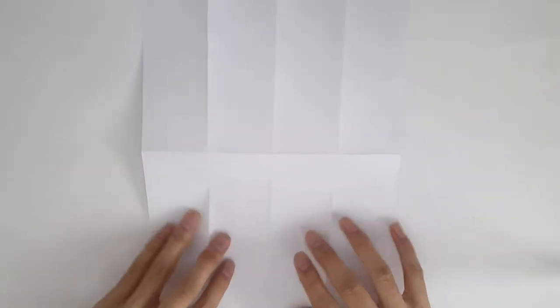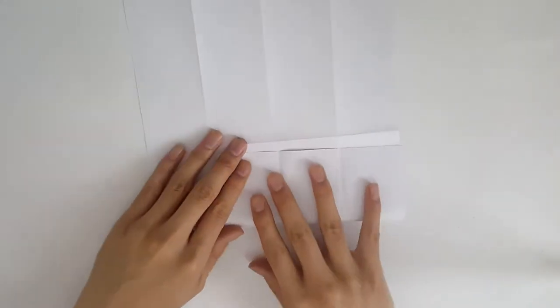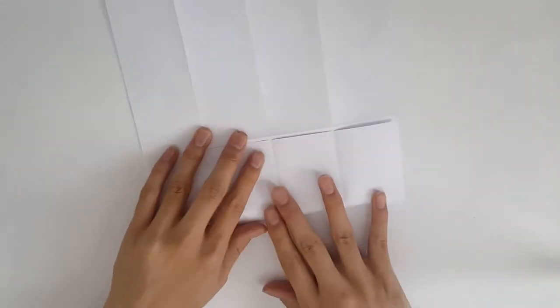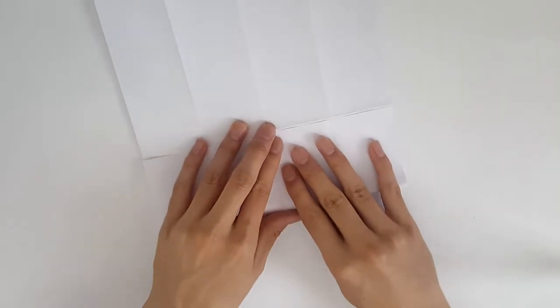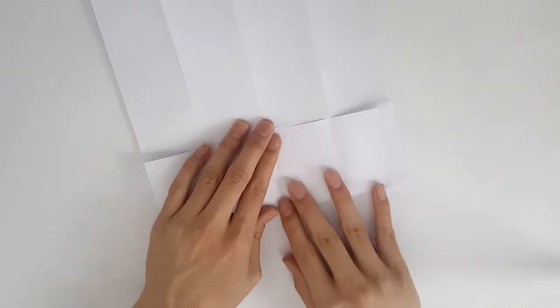Next we're going to turn over the piece of paper and fold it in half again horizontally, meeting the middle horizontal line, and we're going to do this to the bottom and the top.